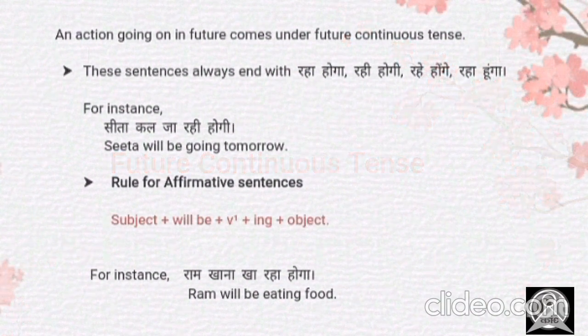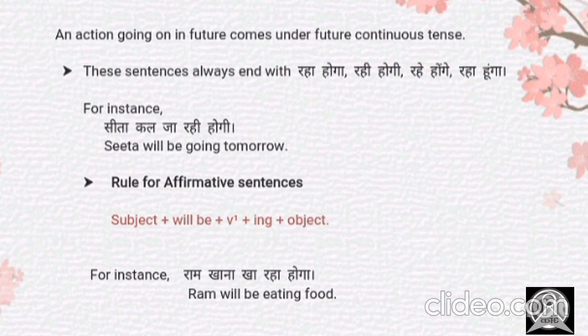Now let's come to the point. As we all know, the action going on in the future comes under future continuous tense — which is not going on right now and which didn't happen in the past. There are some identities here: it always ends with 'raha hoga', 'rahi hogi', 'rahe hongay', or 'raha honga'. For instance, we can say 'Sita kal ja rahi hogi' — Sita will be going tomorrow. Sita is not going anywhere today.